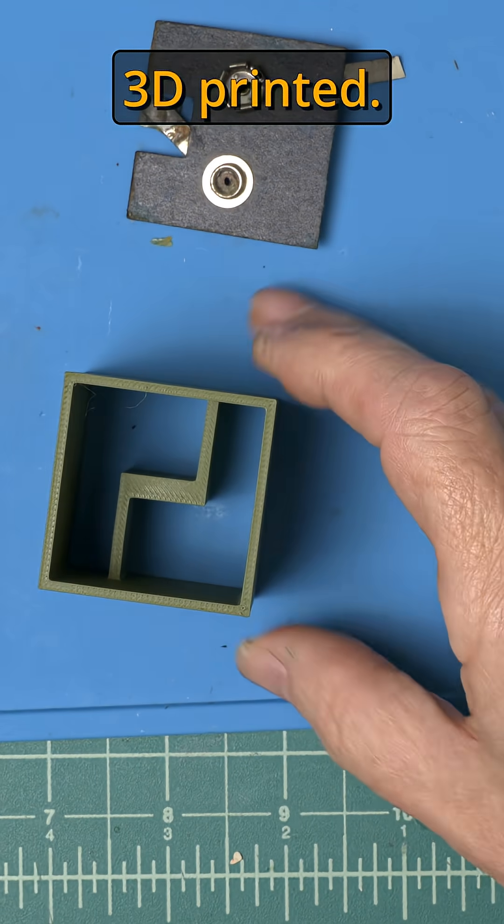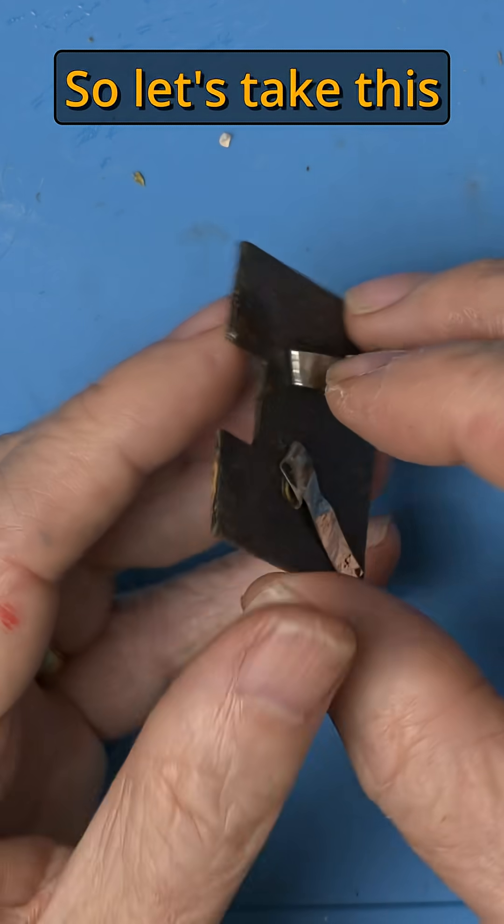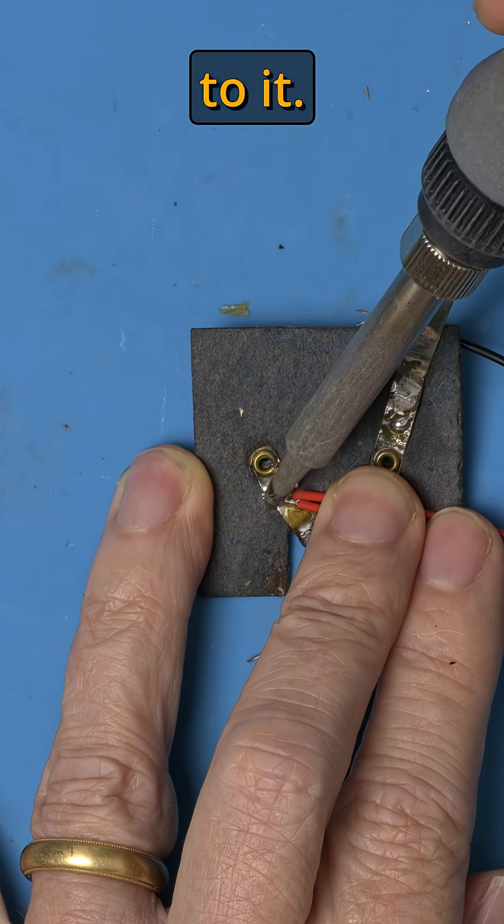All right, here's the battery box we 3D printed. This will go on top. So let's take this piece and attach two nine volt connectors to it.